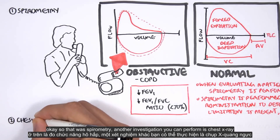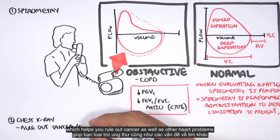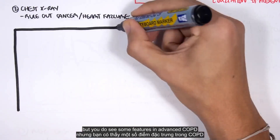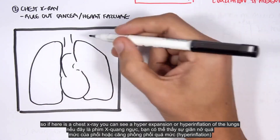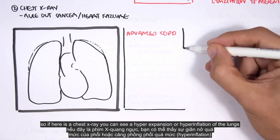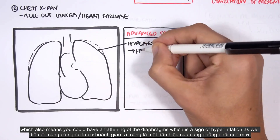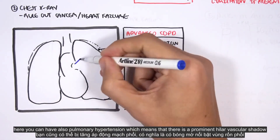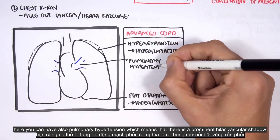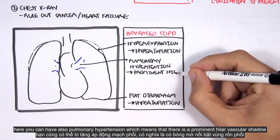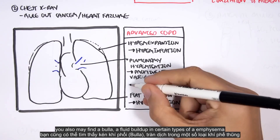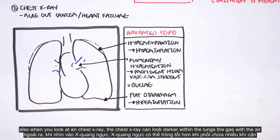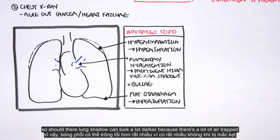Another investigation you can perform is chest X-ray, which helps you rule out cancers as well as other heart problems. In advanced COPD you can see hyperinflation of the lungs, which also means flattening of the diaphragms. There can also be pulmonary hypertension presenting as a prominent hilar vascular shadow. You may also find bullae — fluid buildup in certain types of emphysema. The lung shadow can look a lot darker because there is a lot of air trapped.